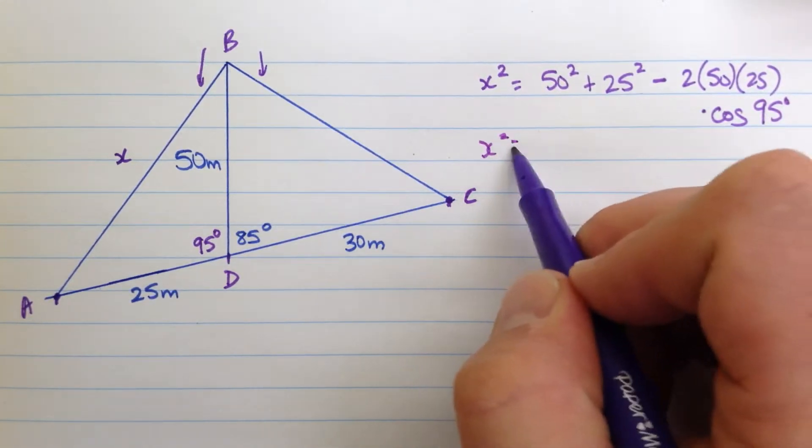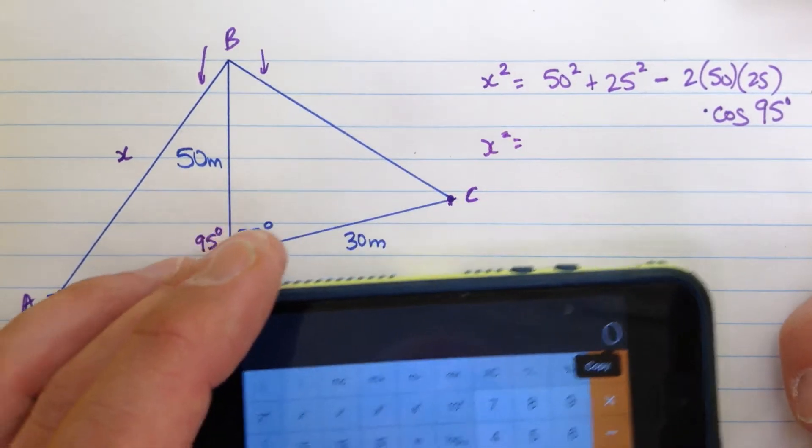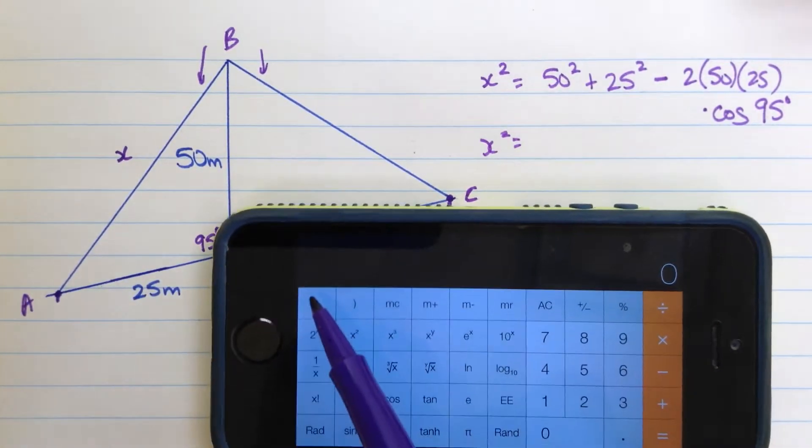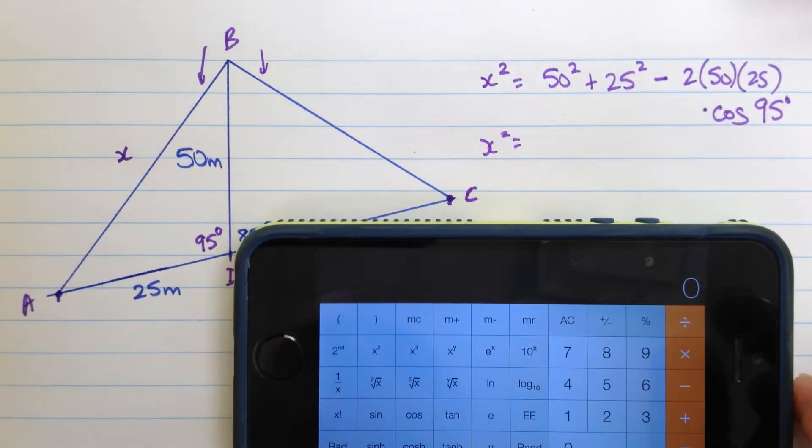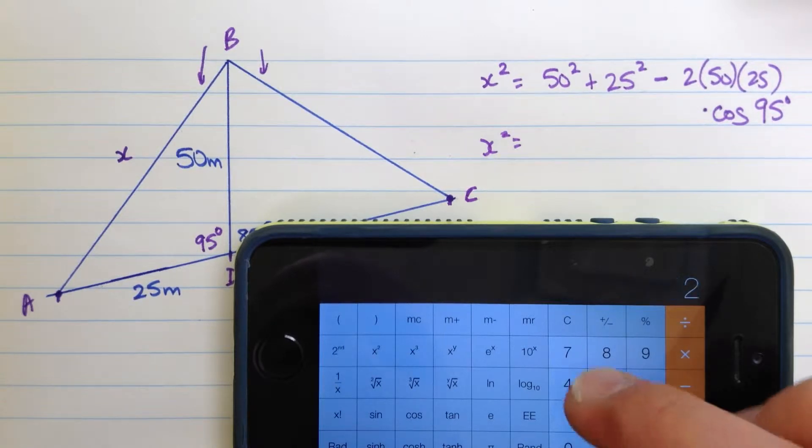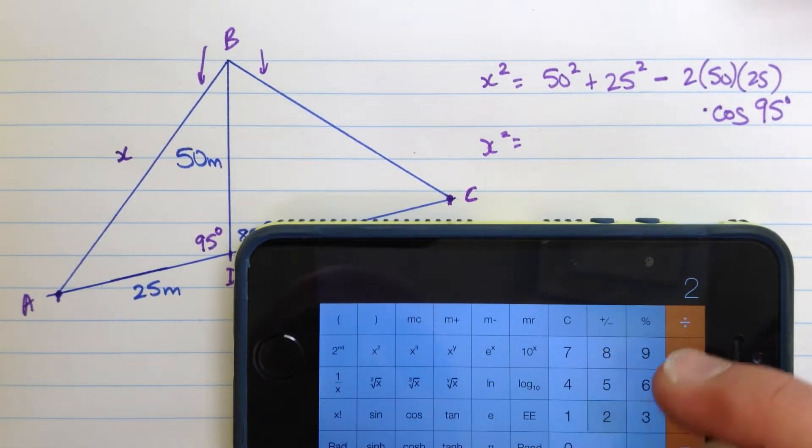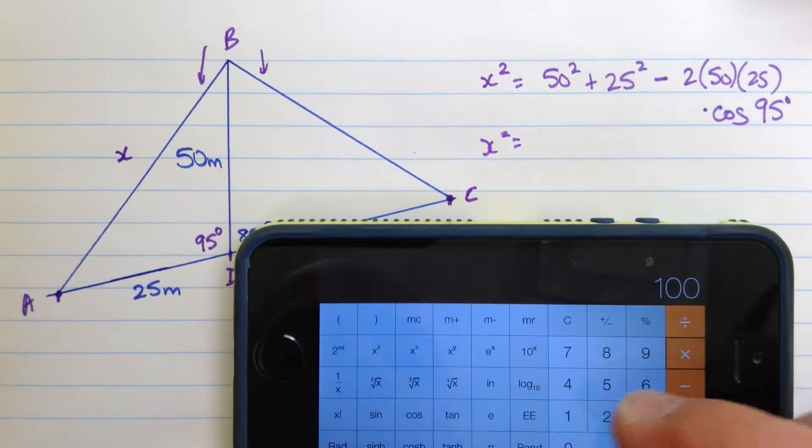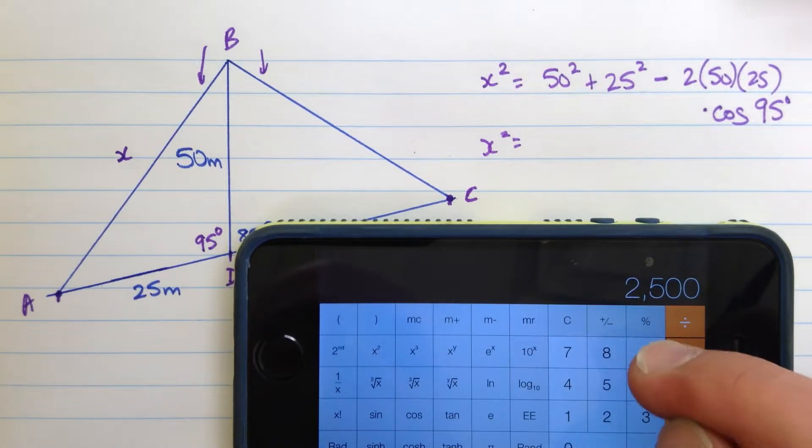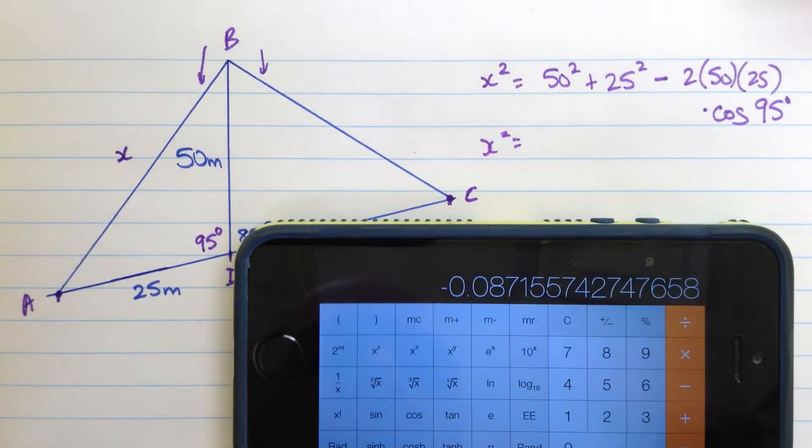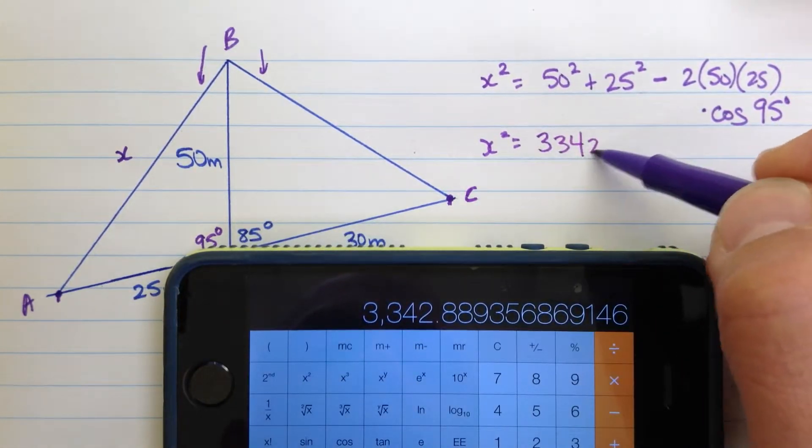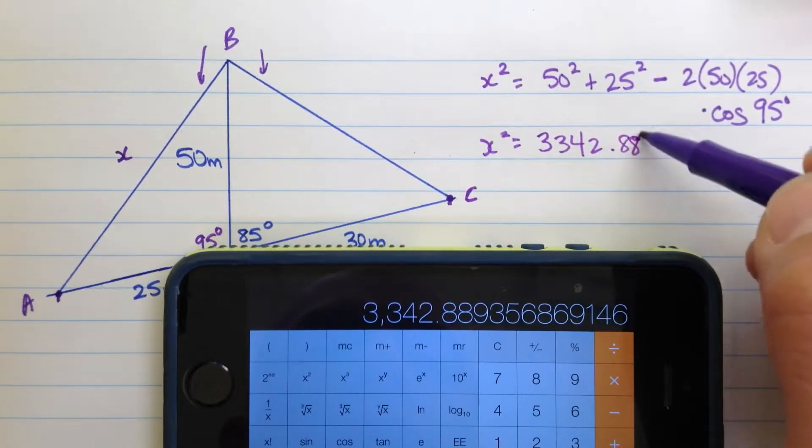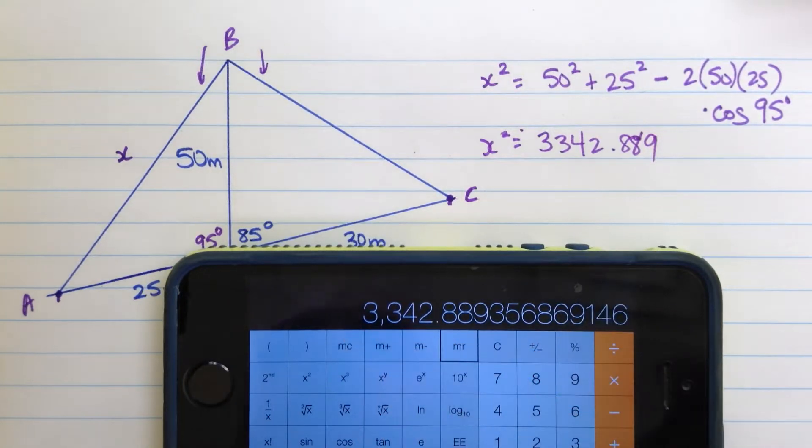Okay, so x squared is equal to, and we're going to just multiply this all out. I'm going to do this in one fell swoop on my calculator here. So this is the iPhone calculator. Notice I'm not in radian mode. If I was, I'd see that there. Rad is bad, so change it to degrees for right now for this question. And let's do 50 squared plus 25 squared minus 2 times 50 times 25 times, now cosine of 95, I press 95 cos and then I hit equals. Alright, so I've got 3,342.889 approximately. I'm going to store that value in case I mess up.